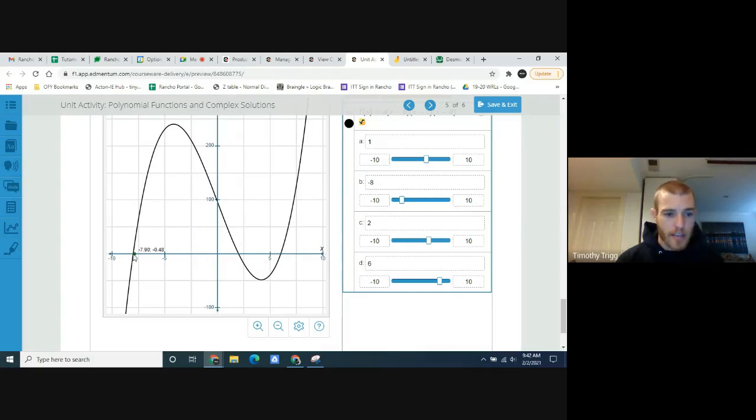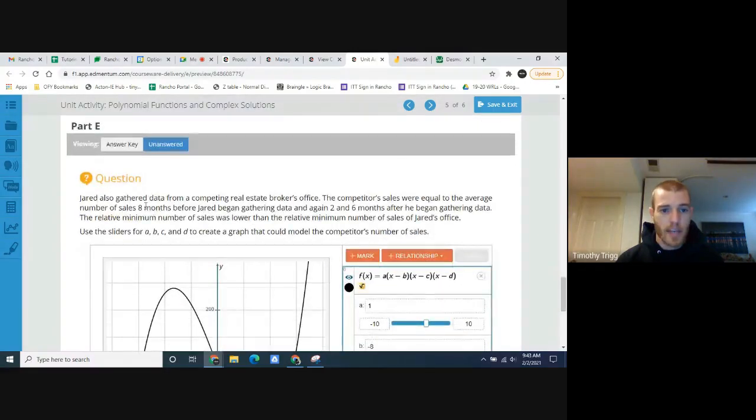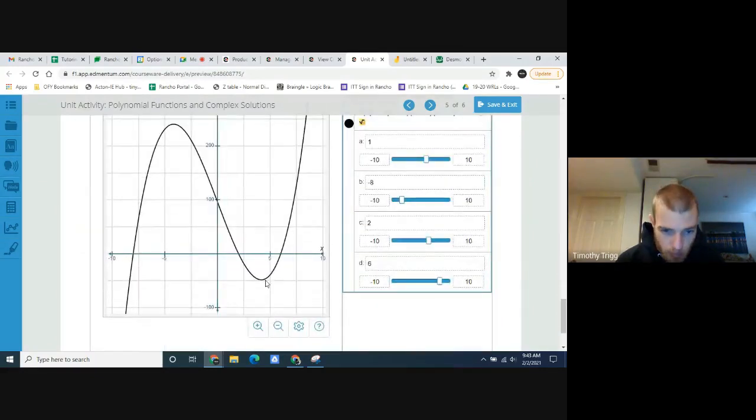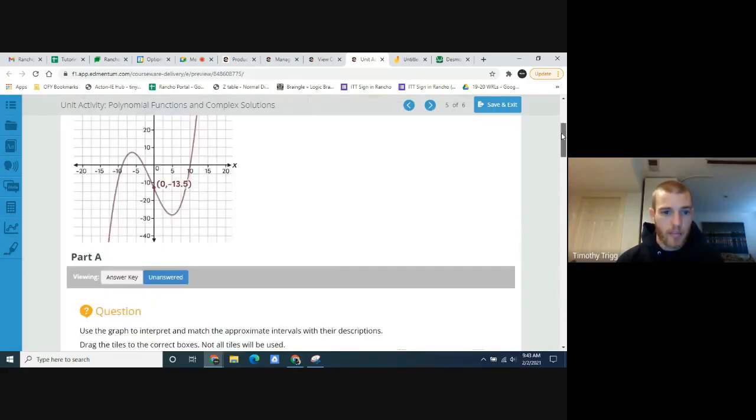So for minimum x, we're going to put that at negative 10. And then for max x, we can just put that as 10. And you see that makes it very much clearer. And you can still see the y-axis goes up very high still. Okay. So this looks like it works. Notice it has an x-intercept at negative 8, another one at 2, and another one at 6. Right?